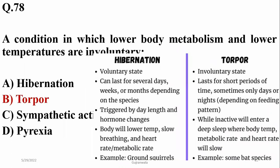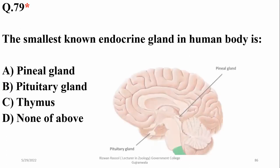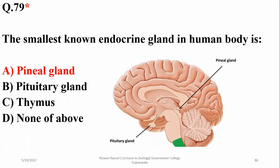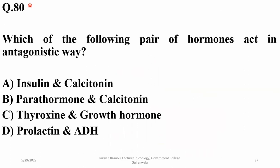Question 78: a condition of lower body metabolism and lower temperature that is involuntary is hibernation. It is a longer duration and involuntary state. Question 79 concerns the smallest endocrine gland in the human body. Question 80: a pair of hormones that act in an antagonistic way includes insulin and calcitonin. That covers all 20 questions; the remaining last 20 questions will be uploaded soon — thank you.